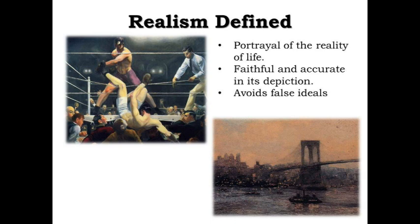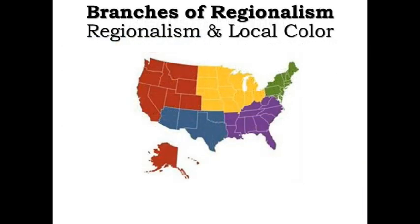There are three branches of realism that you need to be familiar with. The first is realism itself. Realism is defined as the contrast to the idealistic look at the world. In the realistic world, authors attempt to represent familiar things as they really are. Authors chose to depict everyday and seemingly ordinary activities and experiences instead of using the romanticized versions of a life that none of us actually lead.